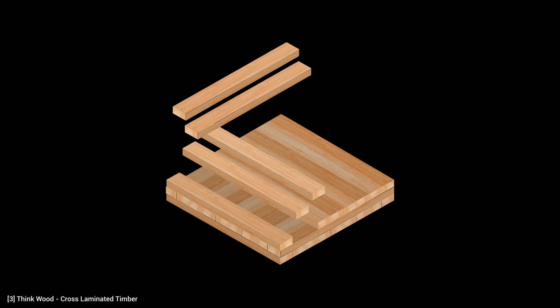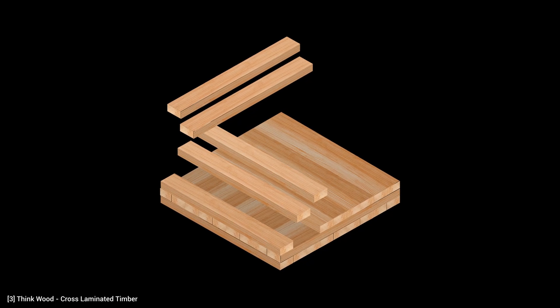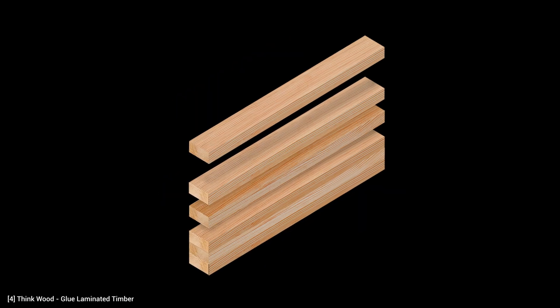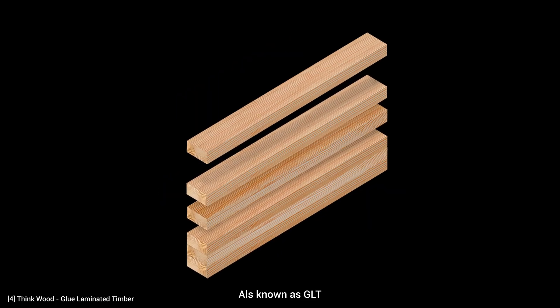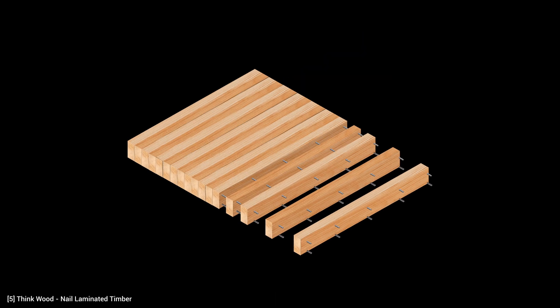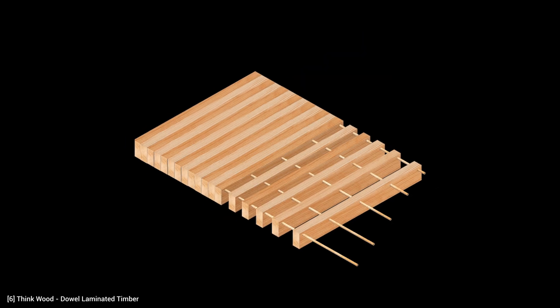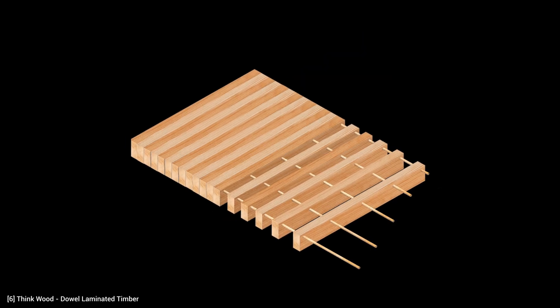There are several types of mass timber, the most popular being cross-laminated timber or CLT, glue-laminated timber or glulam, nail-laminated timber or NLT, and dowel-laminated timber or DLT.